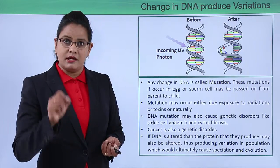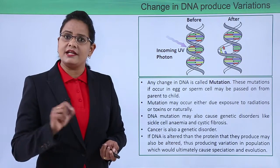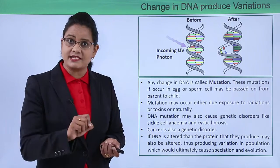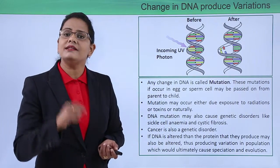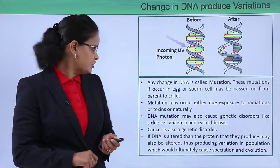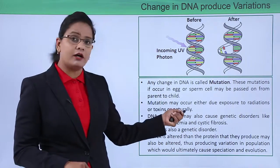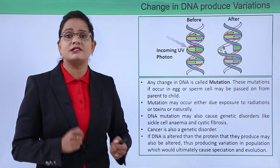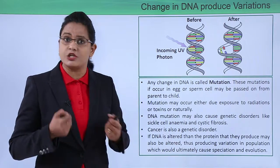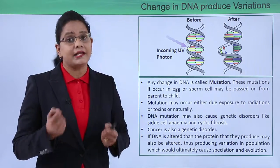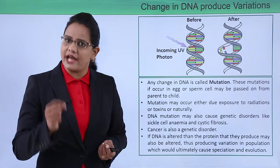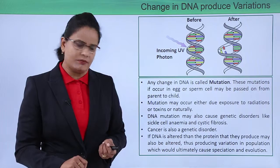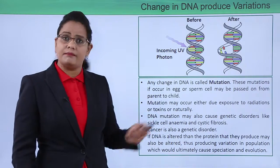These changes are known as mutations. Any change in the DNA is called a mutation. These mutations, if they occur in an egg cell or a sperm cell, are transferred from generation to generation. Mutation may occur by various reasons — externally, like UV radiation, exposure to X-ray radiation, and heat — but it can also occur naturally by the method of crossing over during the meiotic phenomenon.